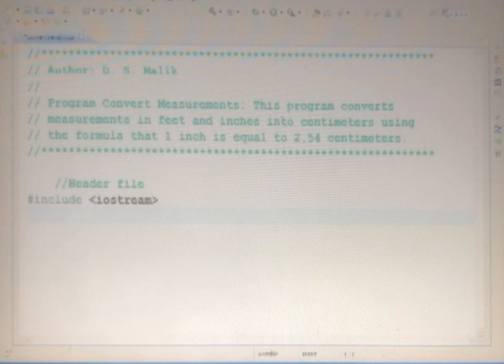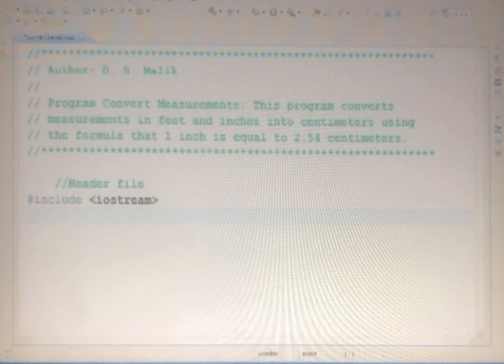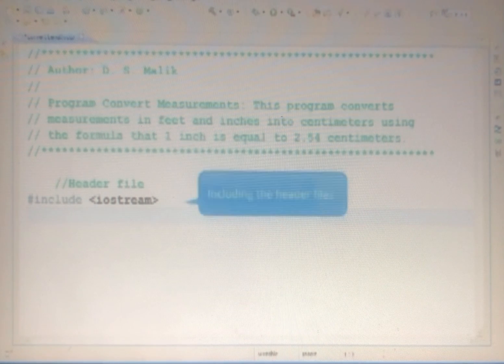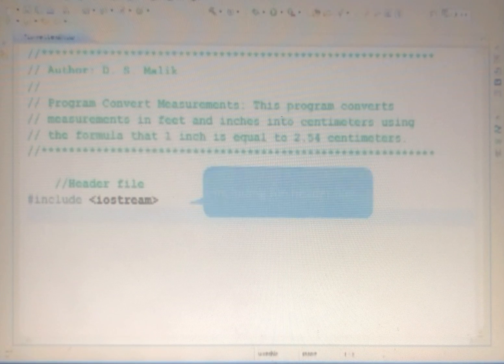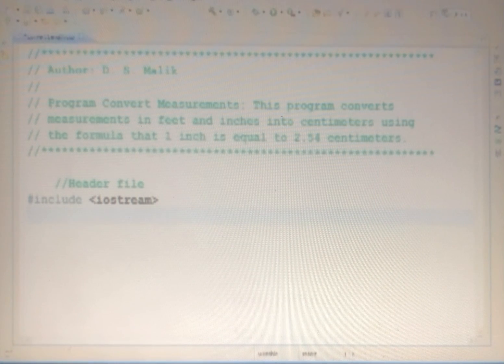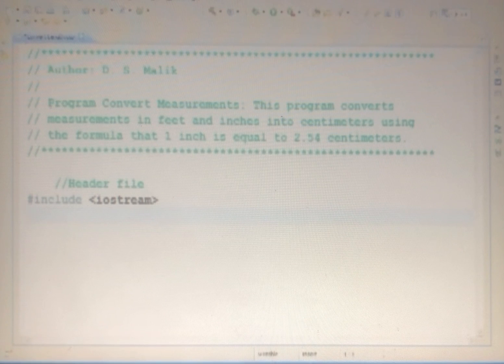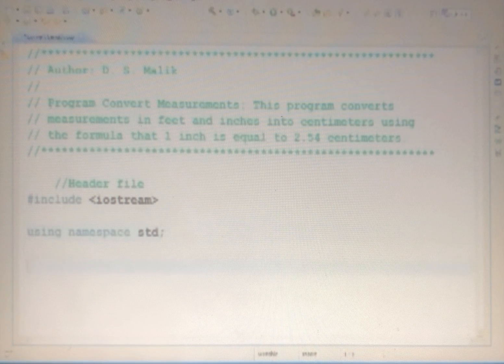Thus, the first statement of the program, after the comments, will be the preprocessor directive to include this header file. To calculate the equivalent length in centimeters, you need to multiply the total inches by 2.54. Instead of using the value 2.54 directly in the program, you will declare this value as a named constant.